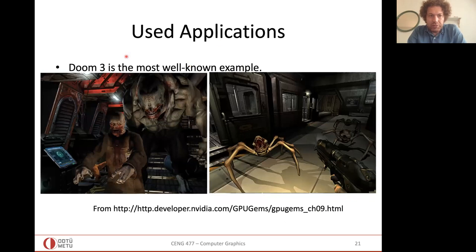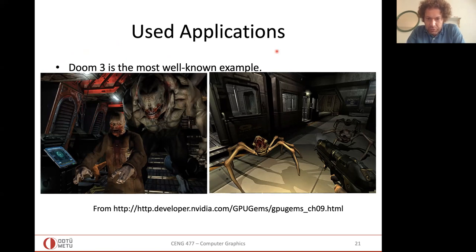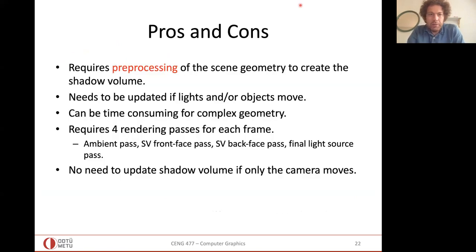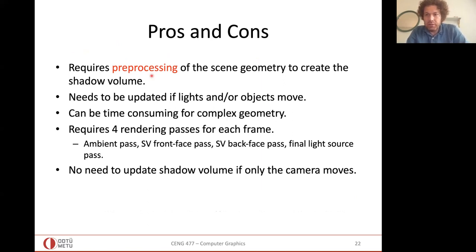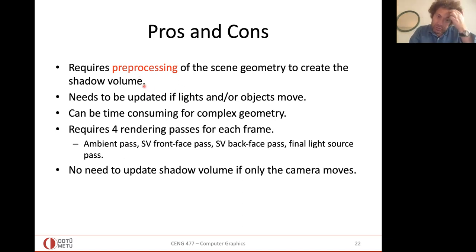Shadow volumes are used in many famous applications, like the video game Doom 3, which uses this algorithm to generate its shadows. As for pros and cons: the preprocessing — detecting contour edges — must be done for all edges in the scene. Also, those volumes depend on the light position; if you move the light even slightly, you have to recompute all the preprocessing again, which is not efficient.